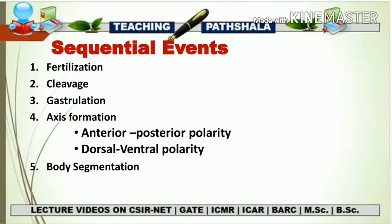In my very first video of developmental biology I have already told you that whatever process occurs in the developmental area will only occur in a sequential way. The sequence in developmental biology of Drosophila is: first fertilization, then cleavage, then gastrulation, then formation of the anterior-posterior axis and the dorsal-ventral axis, and finally body segmentation.